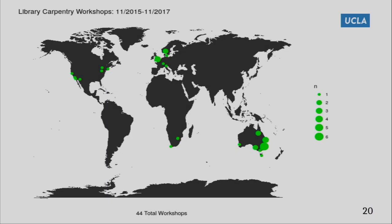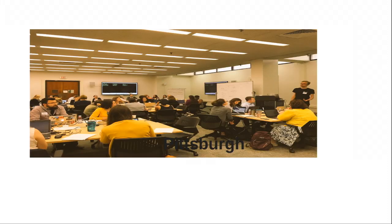Looking at what we've done in two years, I put it on a map. Australia is huge partly because Belinda was really pushing it there with roadshows, but you can see we have global reach. We want to improve North America — currently just five or six workshops. We've had 30 different cities in 10 countries: in 2015 we had one workshop, in 2016 eighteen, and in 2017 twenty-four — approximately 800 learners in total.